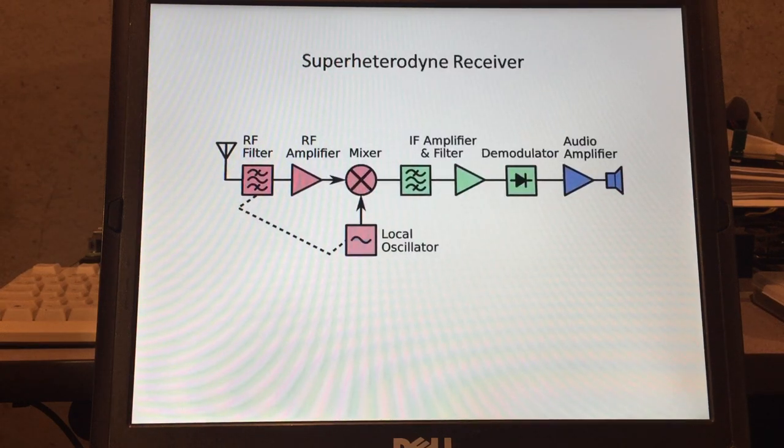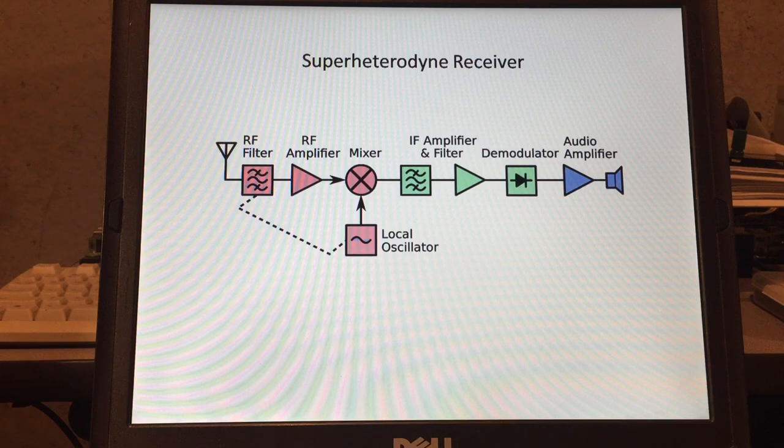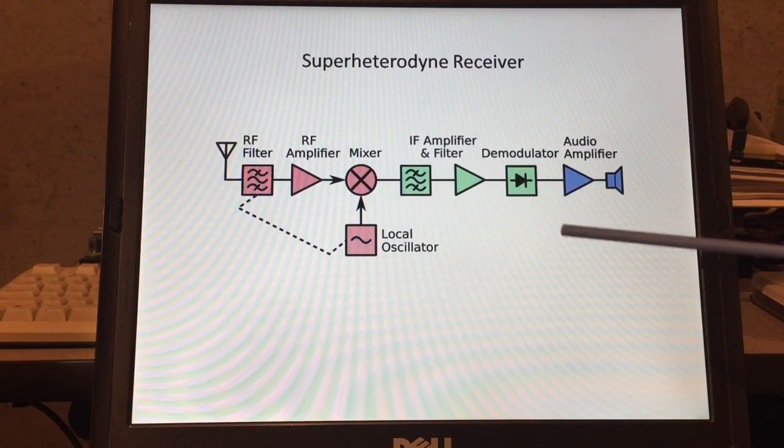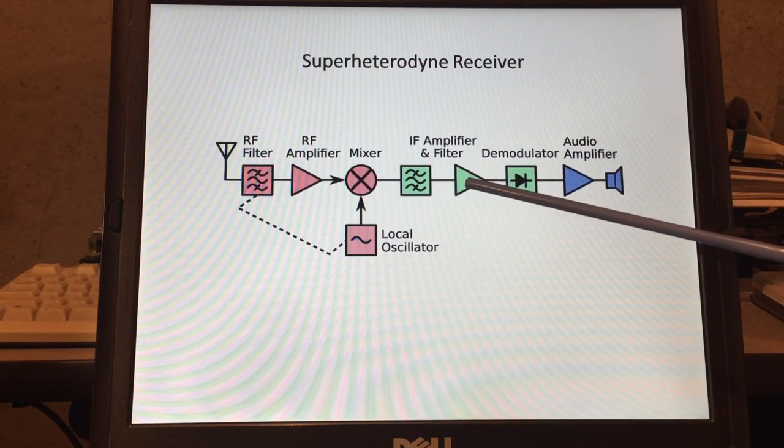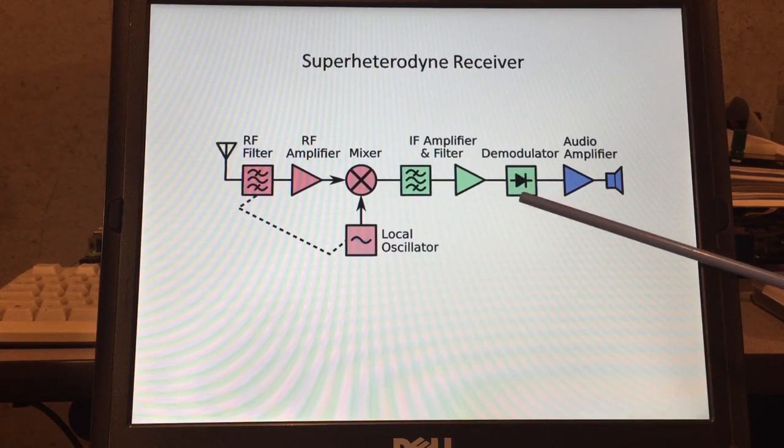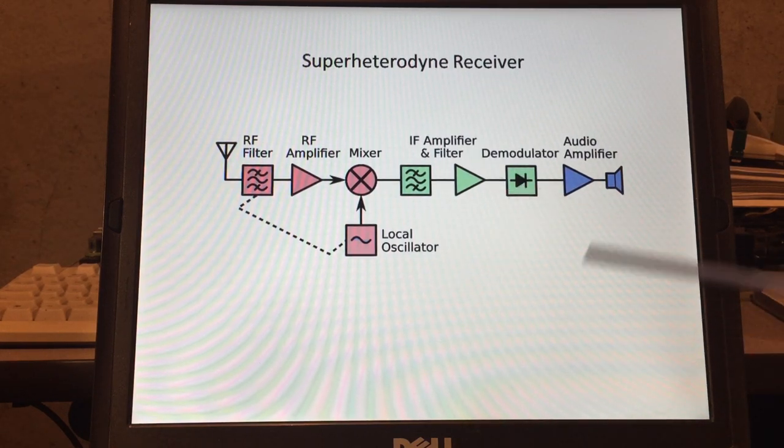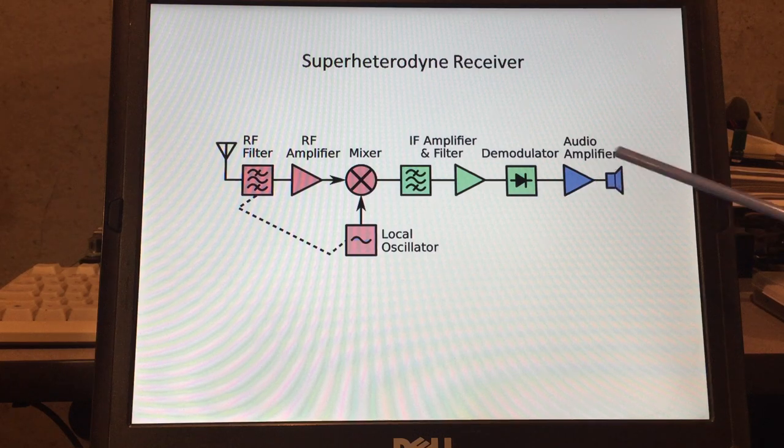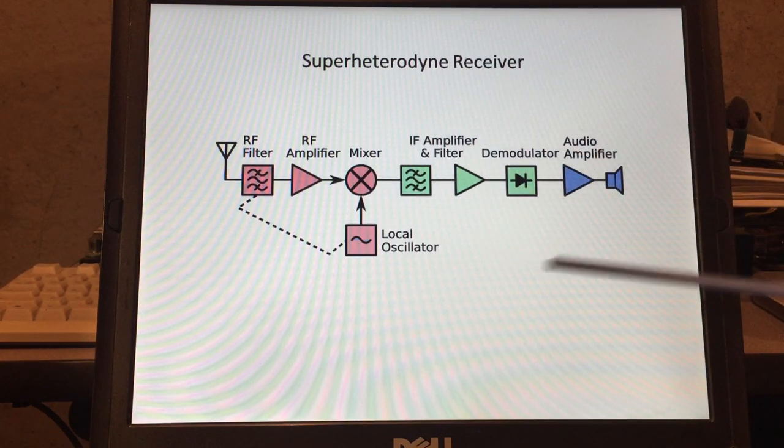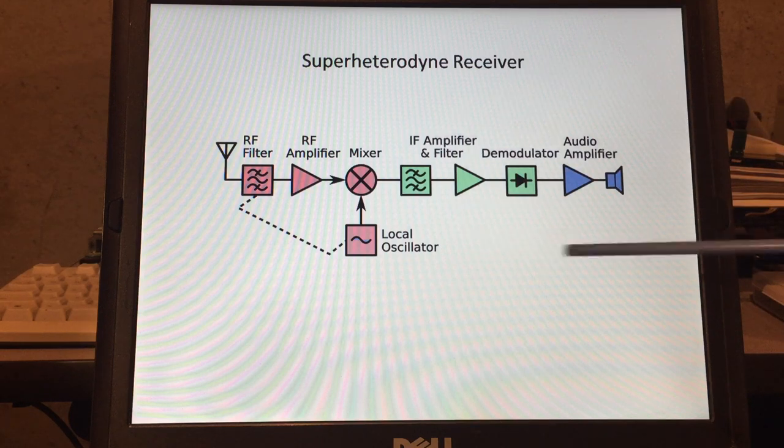If you remember from the other videos, I showed the superheterodyne block diagram and at the very end after the RF amplifier we had a demodulator or detector, sometimes called an envelope detector, and then an audio amplifier and a speaker. So today I'm going to focus specifically on the demodulator and audio amplifier.